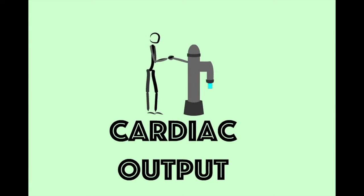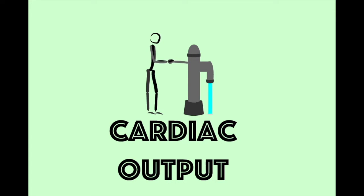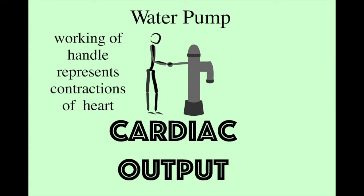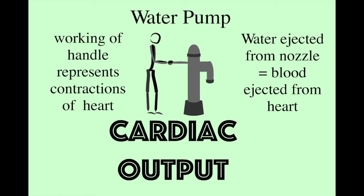Cardiac output of course refers to the work the heart does pumping blood out into the body. Here, to represent cardiac output and the heart, we have an old fashioned hand-driven water pump. The working of the handle represents the contractions of the heart, and the water coming out of the nozzle represents blood ejected during these contractions.